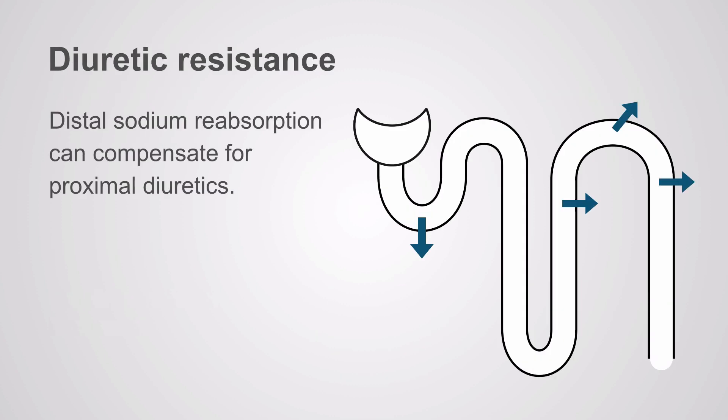The last pattern of diuretic resistance occurs when you get distal sodium reabsorption compensating for a proximal diuretic. For example, even if acetazolamide is highly effective at increasing downstream sodium delivery, the kidney has a number of different opportunities to increase its sodium reabsorption and prevent net diuresis. This is one of the primary reasons that acetazolamide is considered a weak diuretic.